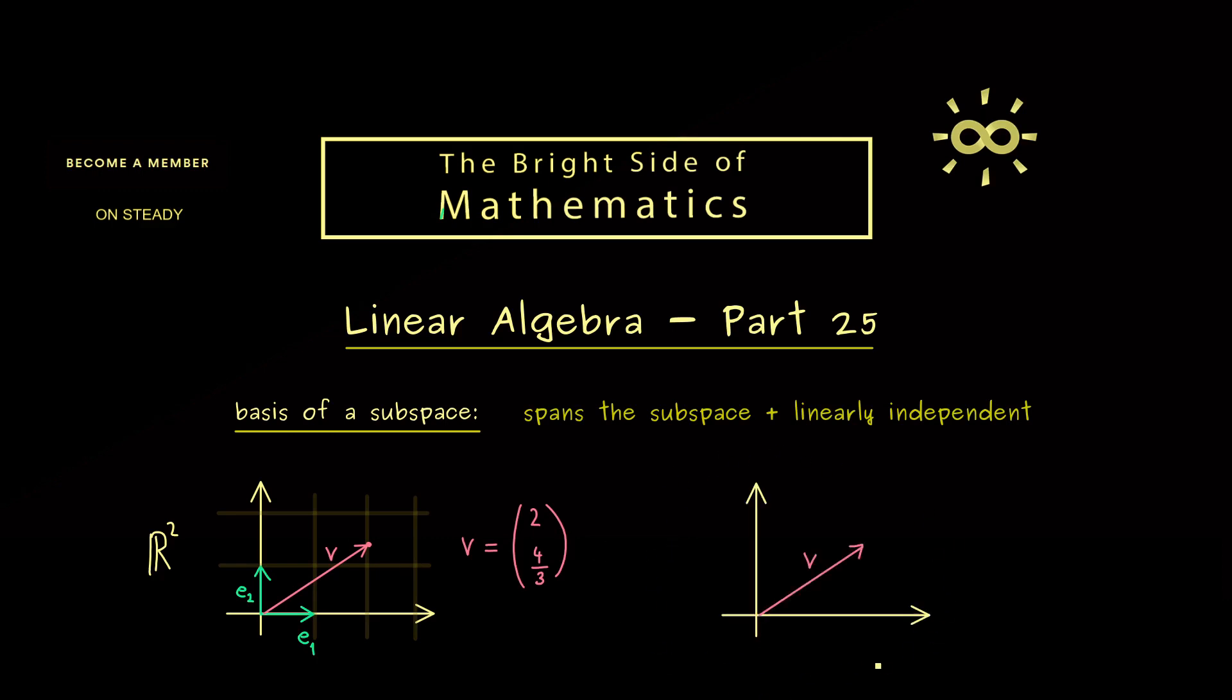So here is our vector space R² as the plane and now we choose two different vectors as a basis. So for example this one could be our first basis element and this one the second. Now there you should see obviously both points for basis are satisfied. However now this new basis here also defines a new grid in the plane. So you see it does not have to be right angled as before. This is no problem at all.